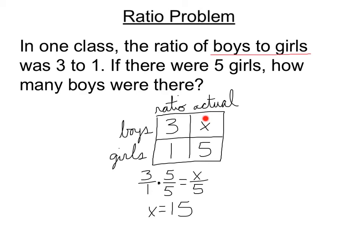Now, x was in the first row, so the label then will be boys. So, 15 boys. The 5 here in my form of 1 is going to be called the constant factor, since we multiplied both the denominator and the numerator by it in order to find out that missing number.